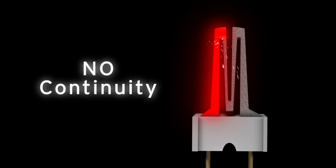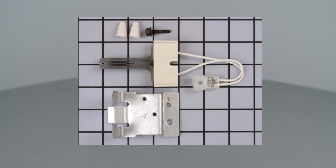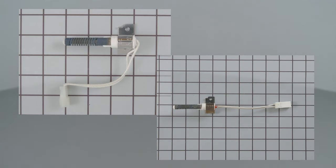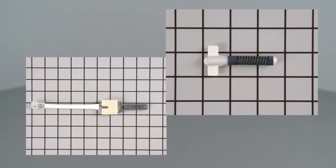No continuity means the electrical path is broken and the igniter is burned out. Dryer igniters come in many shapes and sizes, but all of them can be tested for continuity in the same way.